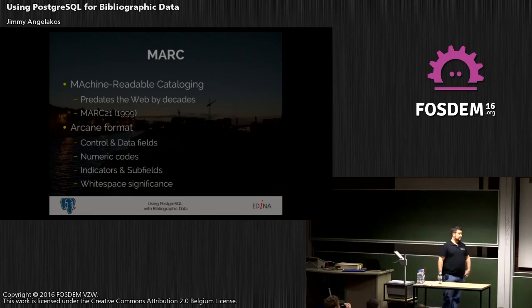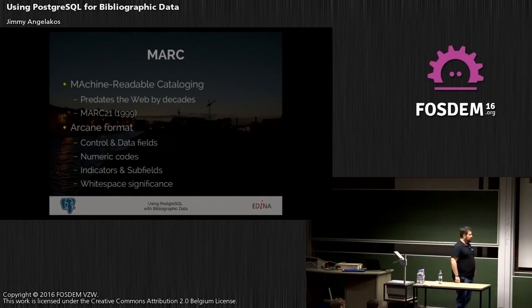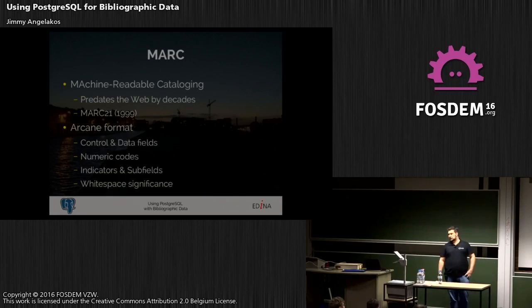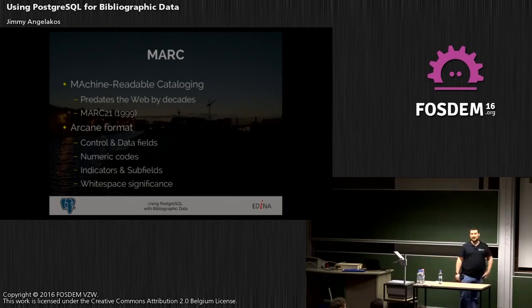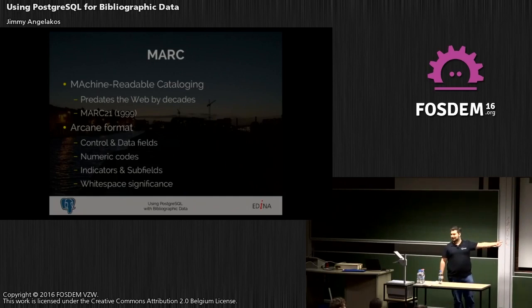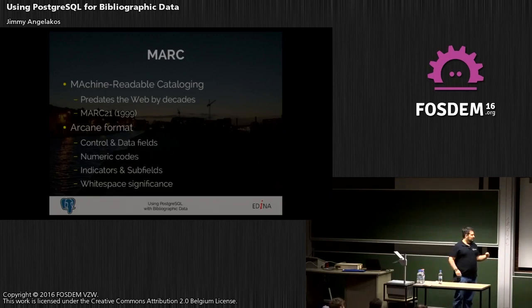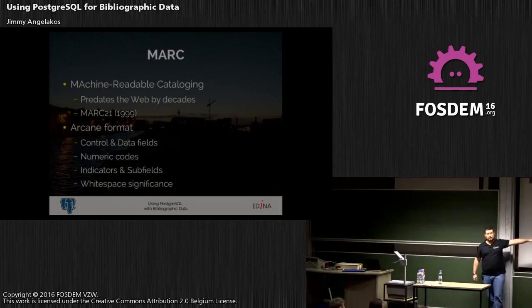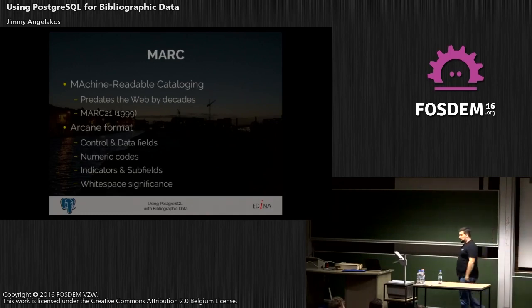It's a very strange format — a text format with no usable delimiters. It's not even usable as a CSV format. It has control fields and data fields which are different, and they're all titled by numeric codes. You have to look up the documentation in the Library of Congress to find out what each numeric code stands for. After the numeric code we have indicators for each field, and the indicators modify the functionality of the field. So if you have an indicator of 1 or 9 before the field, it means something else. Then we have subfields, which can be repeated inside a field — for example, a field with numeric code 049 could have multiple subfields titled A.